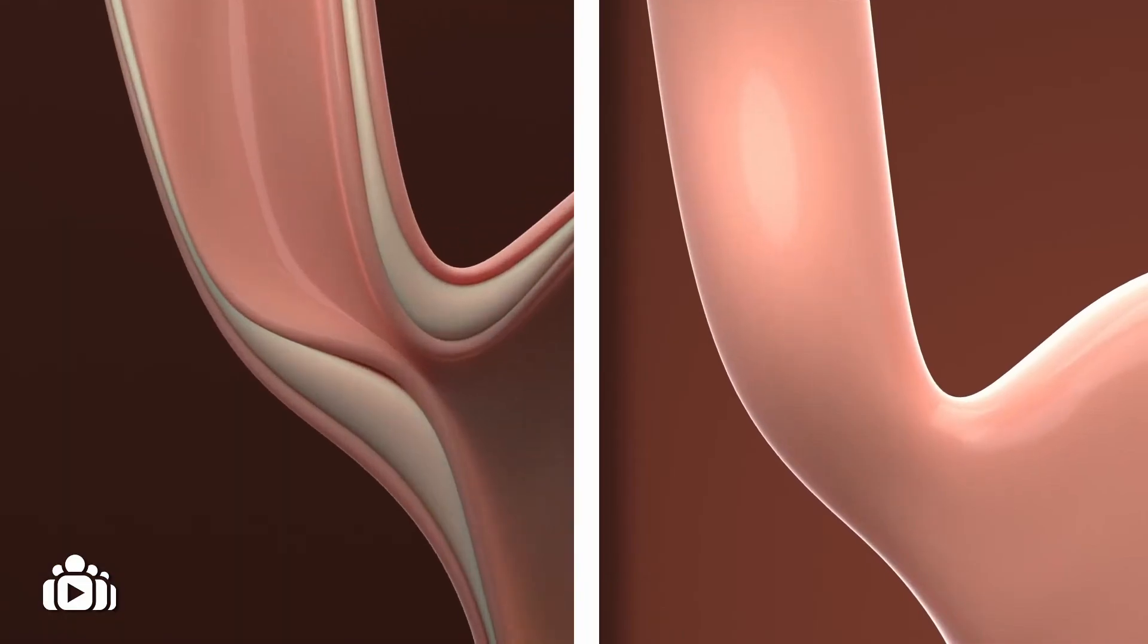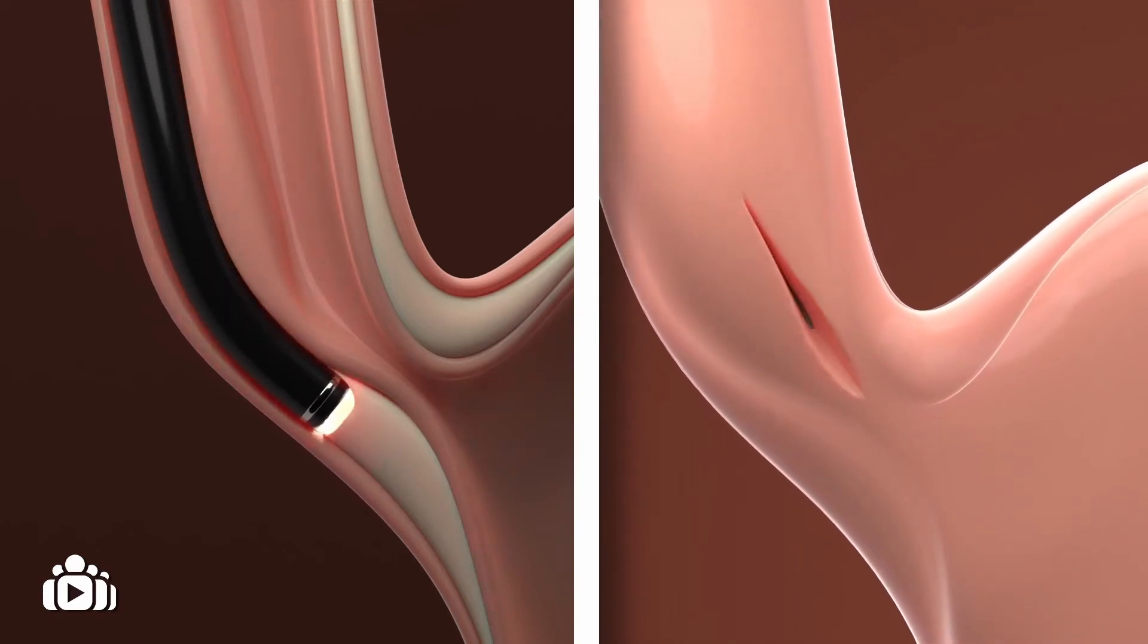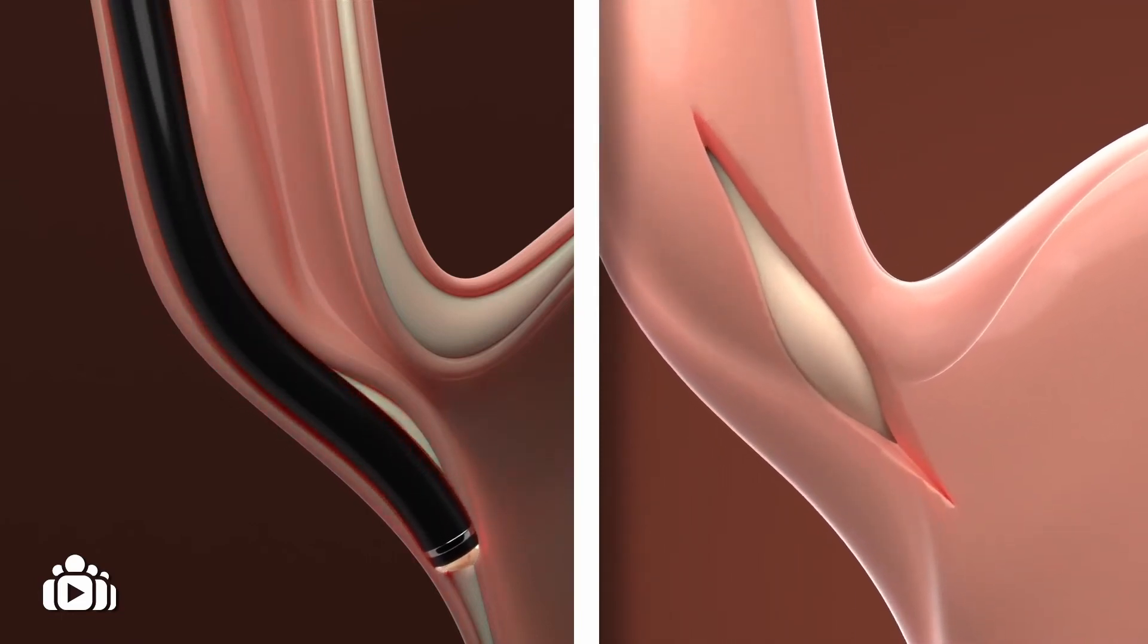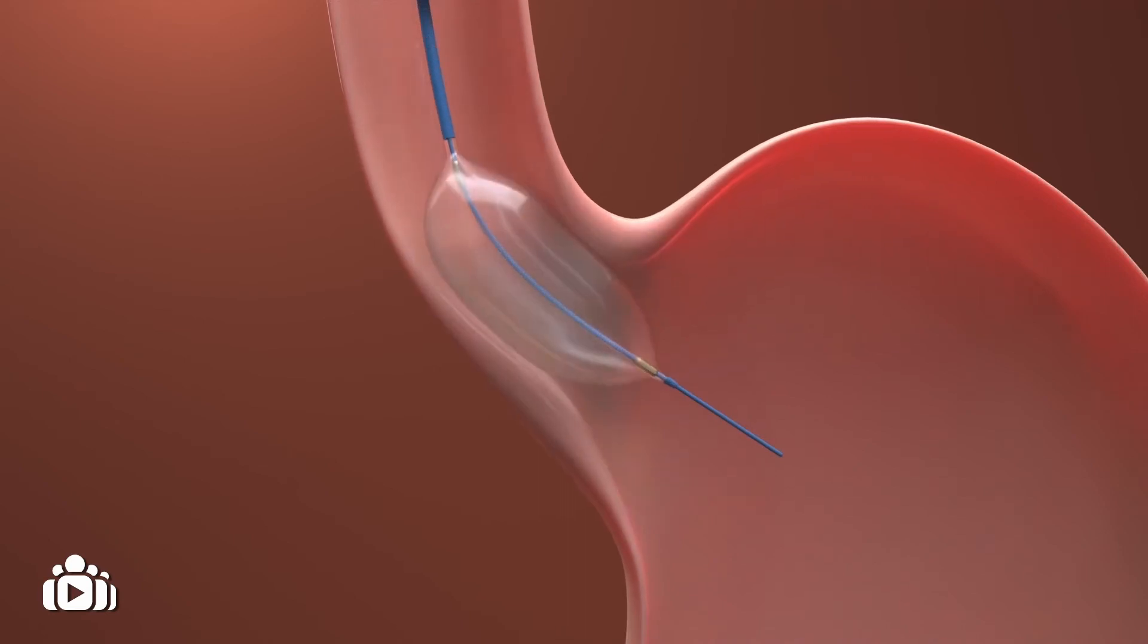This can be done by making a cut through the valve, which is called a myotomy, and this can be achieved via a surgical procedure or via endoscopy. Alternatively, the valve can be stretched using a balloon, which is called a pneumatic dilation.